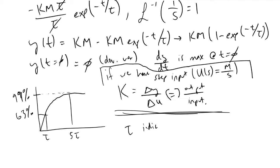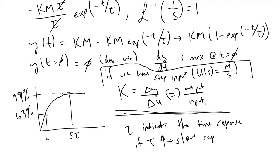The time constant τ indicates the speed of the system's response. If τ is large, we have a slow response; if τ is small, we have a faster response. Intuitively, a large residence time could indicate a very large reactor volume, meaning a step change in some input would take a longer time to realize a change in a state variable compared to a system with a small reactor volume.